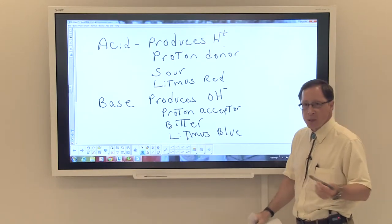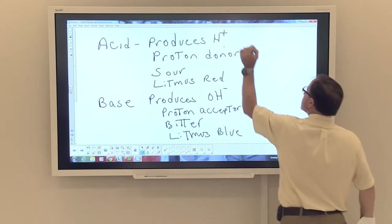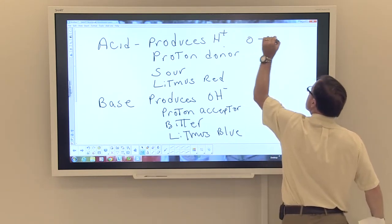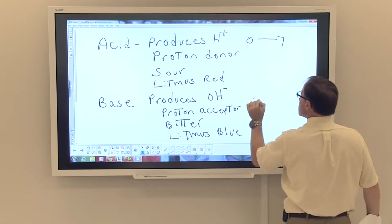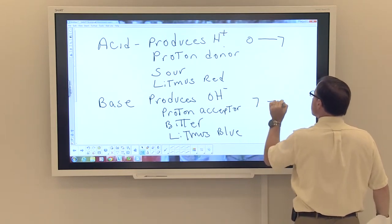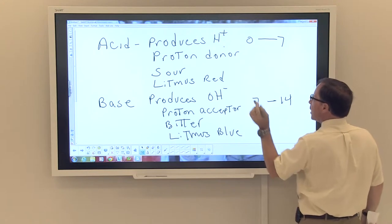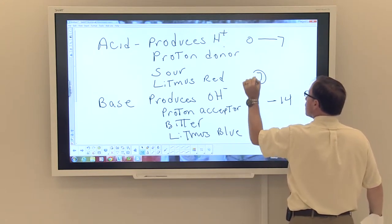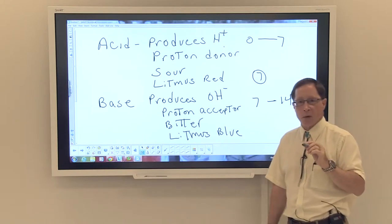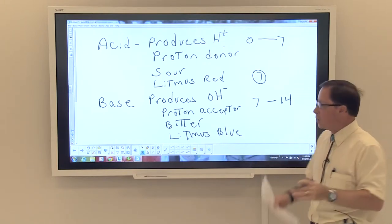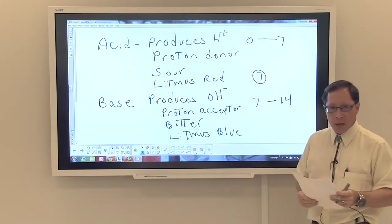If you're looking at the pH scale, an acid would be from 0 to 7. Base would be from 7 to 14. And note that 7 is your neutral spot. At 7.0, you are neither an acid or a base. But that's how the pH will differ.